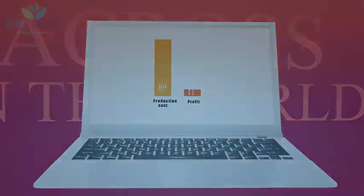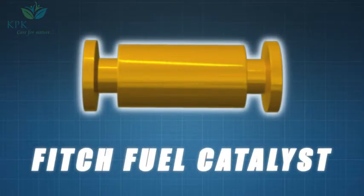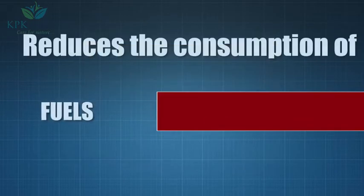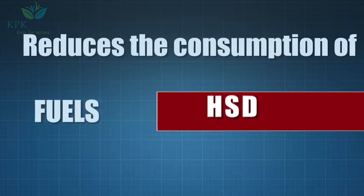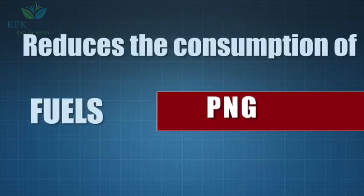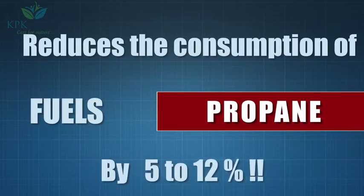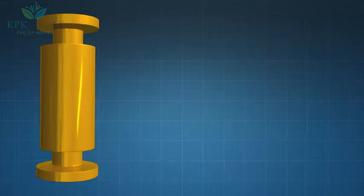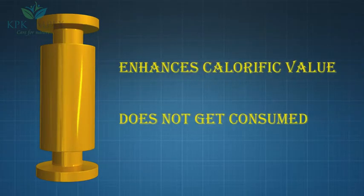The solution to reduce fuel consumption is Fitch fuel catalyst. Made in United States, Fitch fuel catalyst reduces consumption of furnace oil, LDO, HSD, LPG, natural gas and propane by 5 to 12%. It enhances the calorific value of the fuel.